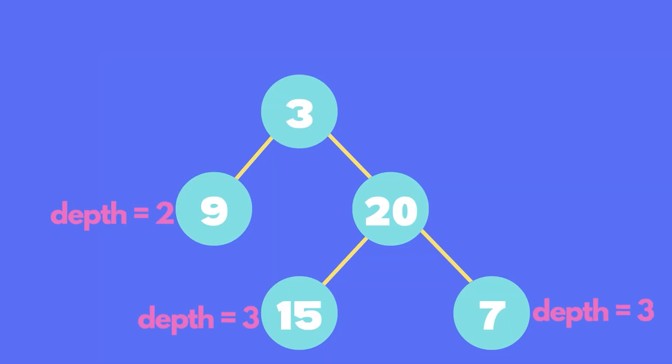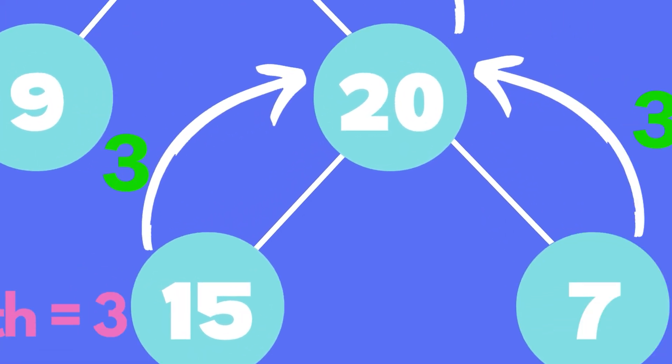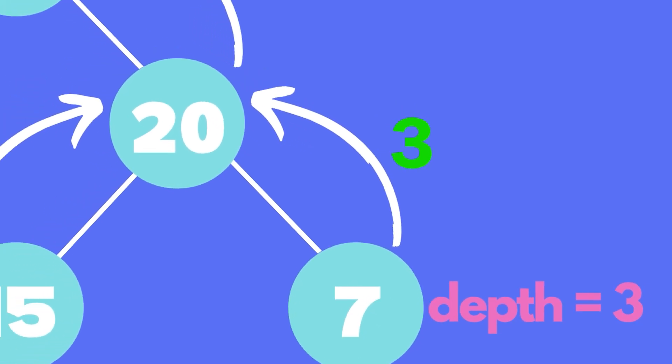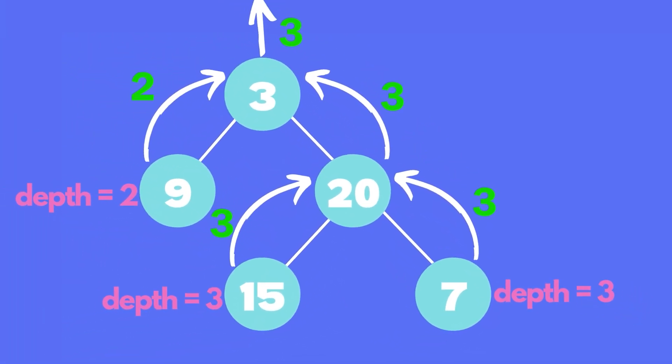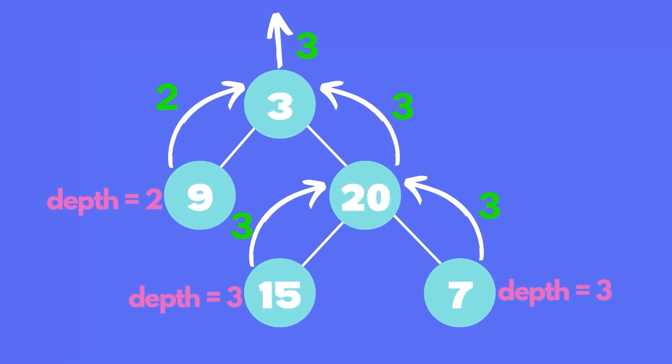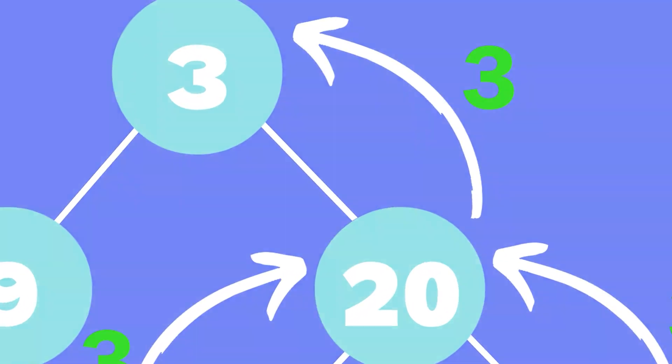We'll have to change our algorithm a little bit. When we reach the end, instead of updating the max depth variable with the depth, we'll just return the depth. Every node now will receive one depth from the left and one depth from the right. The depth returned from the left will be the maximum depth of the left subtree and the one from the right will be the maximum depth of the right subtree. And each node, we'll just return the maximum of these two max depths.